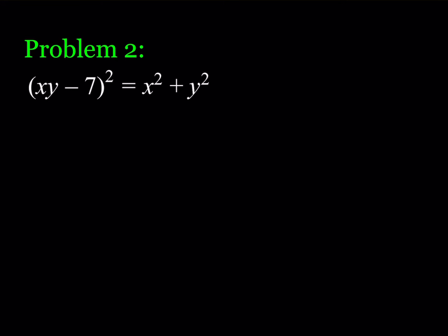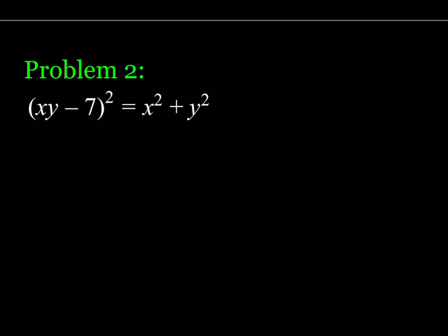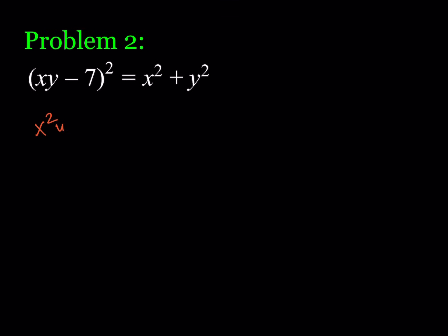Expanding gives us x²y² − 14xy + 49 on the left-hand side, and x² + y² on the right-hand side. I need to manipulate this expression to get perfect squares on both sides. If I can get two perfect squares with some leftover, I can use the difference of two squares.